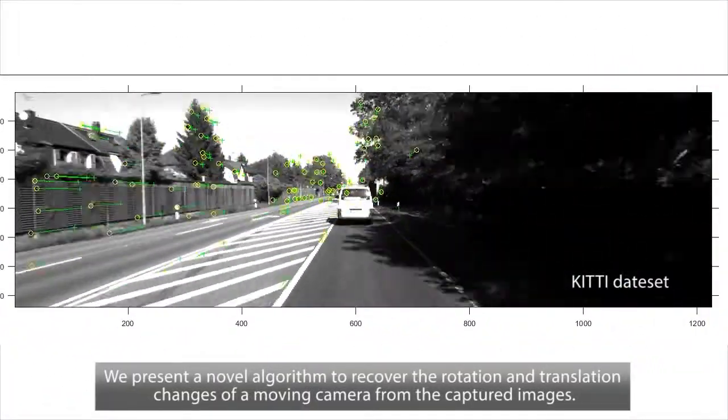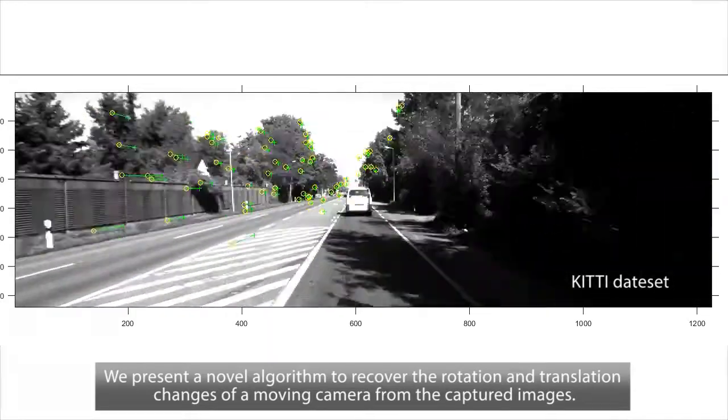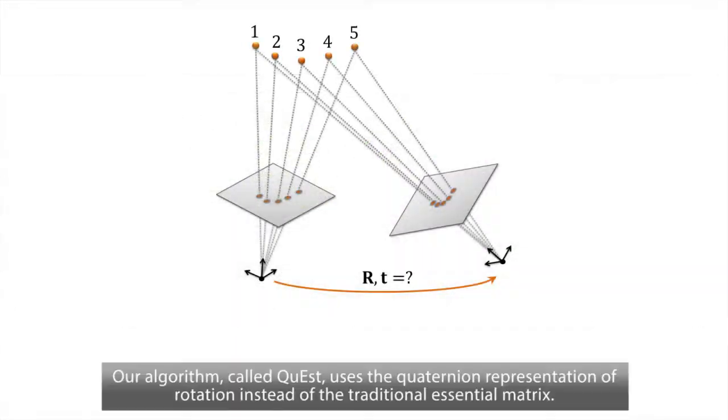We present a novel algorithm to recover the rotation and translation changes of a moving camera from the captured images. Our algorithm, called Quest, uses the quaternion representation of rotation instead of the traditional essential matrix.